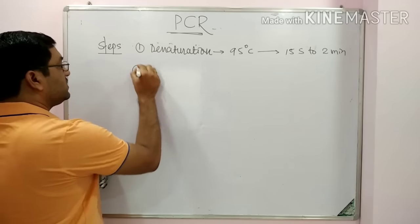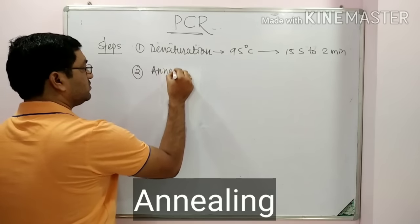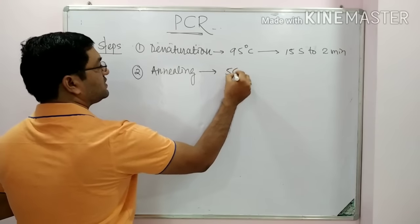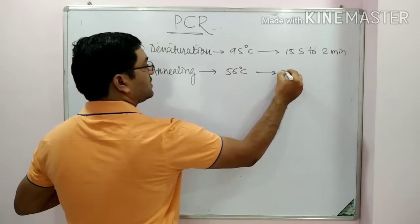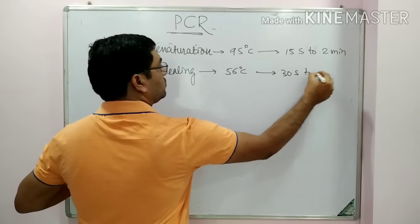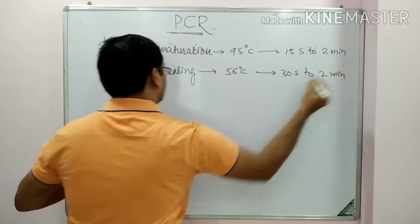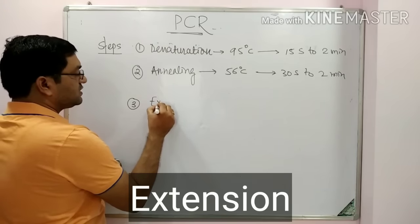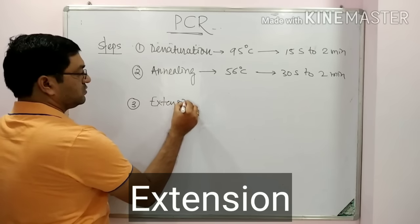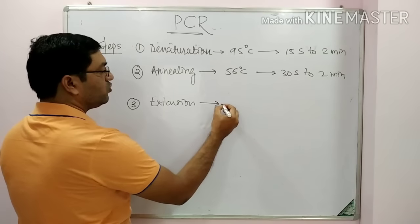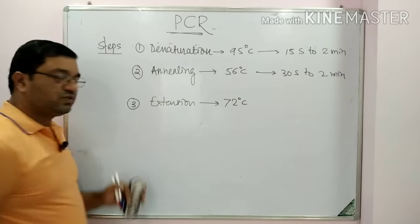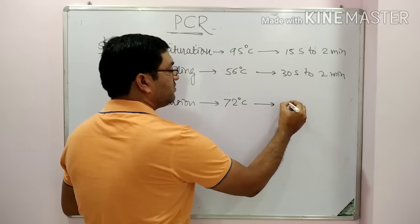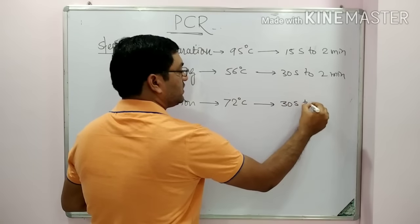The second step is annealing or renaturation, which occurs at 56 degrees centigrade and requires 30 seconds to 2 minutes. The third step is extension or synthesis of the DNA molecule, which occurs at 72 degrees centigrade and requires about 30 seconds to 2 minutes.